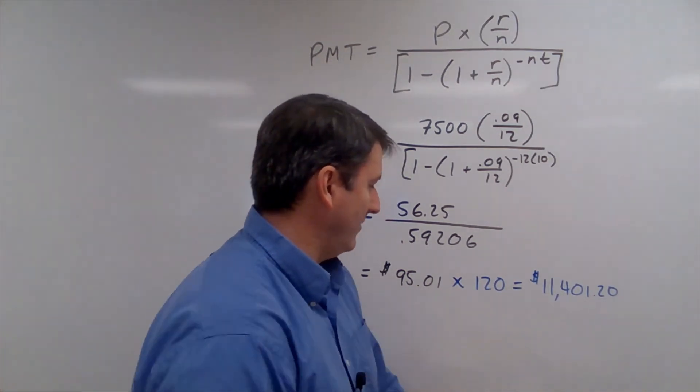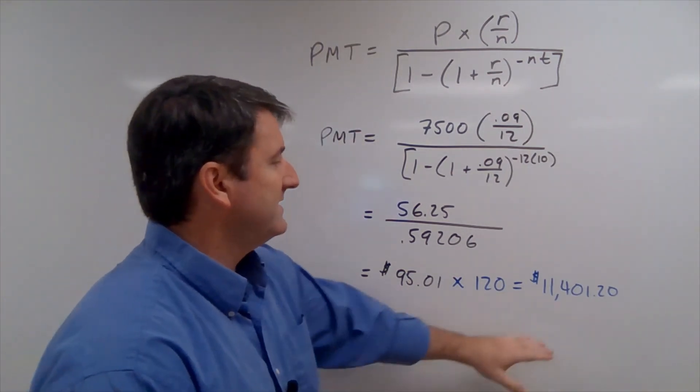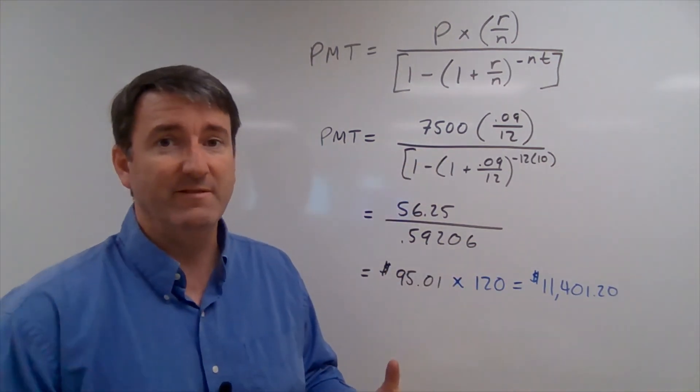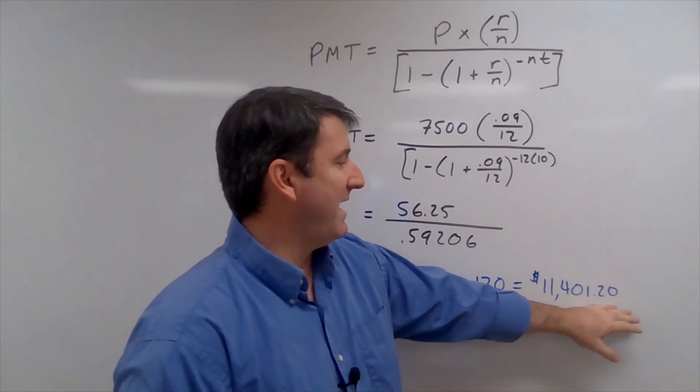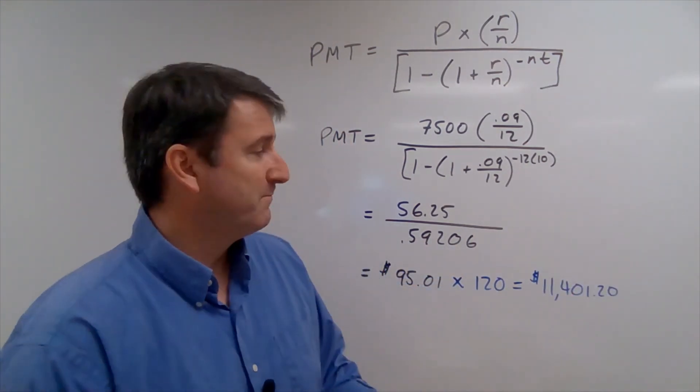And we want to know, for our last question, how much are we going to pay in interest? Well, this is how much we're paying total, and the principal that we have to pay off is $7,500. This amount consists of only two things: principal and interest. So everything above $7,500 is going to be interest.